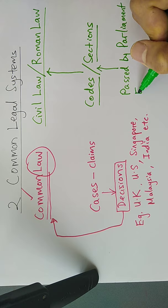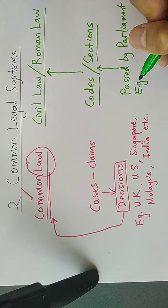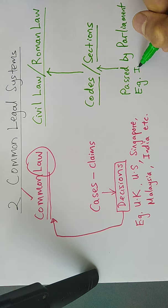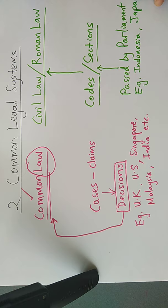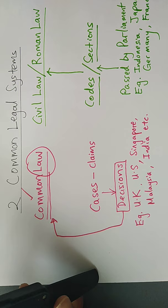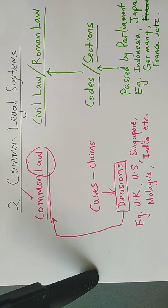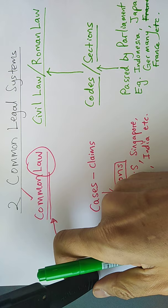So those are the two common legal systems. This one, besides Thailand, the other countries that adopt the civil law or Roman law systems or coded law or section law - you have Indonesia, you have Japan, Germany. A lot of the coded law on business law in Thailand comes from Germany, Japan as well, France, etc.